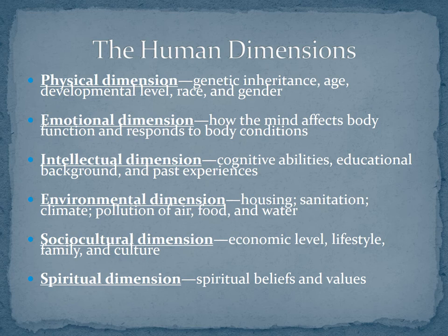When we think about the physical dimension, this includes things like genetic inheritance, your age, developmental level, race, gender, and ethnicity — things we really can't do much about. The emotional dimension is how the mind affects body function and responses to body conditions. We can influence our emotional dimension by trying to do activities that help us de-stress. The intellectual dimension includes cognitive abilities, educational background, and past experiences — how have you learned and grown from those experiences, and how can you apply them to future issues?